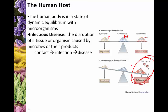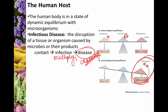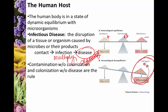The general progression of disease is that contact eventually leads to infection. Contact means simply getting the organisms on you — surface organisms. Infection is where the organisms begin to multiply, and then there is eventual progression to disease where some type of damage is involved.